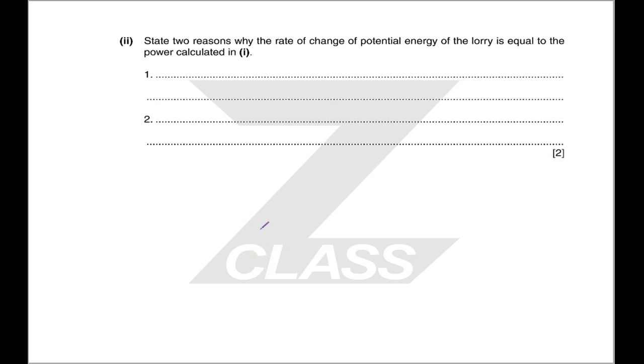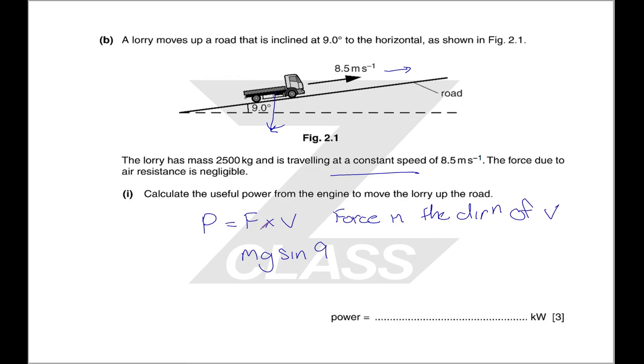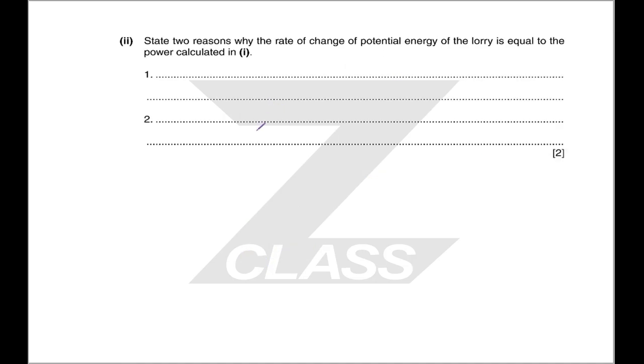State two reasons why the rate of change of potential energy of the lorry is equal to the power calculated. The first thing is to say that there is no loss of energy. We have neglected air resistance, and therefore there is no loss of energy. The second is that there is no change in the kinetic energy. We are travelling at a constant speed, so our kinetic energy is not changing. We are not losing any energy, and therefore all of the work we are doing must be going into the potential energy, because that is all that is left. So, no loss, and delta KE equals 0.